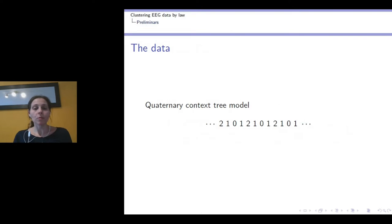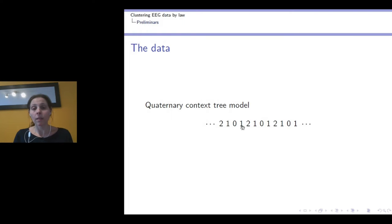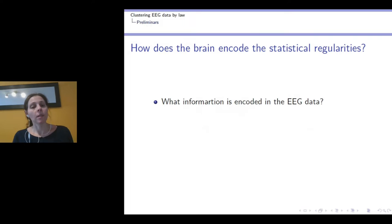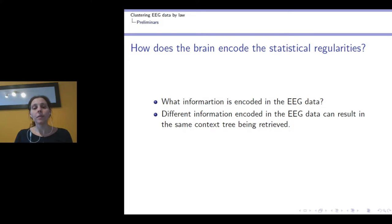We are going to work with the context tree model in the quaternary case, where we have a strong bit followed by a weak bit, then a silent unit, and finally another weak bit. The weak bits were eventually replaced by silent units with probability epsilon, which is a small number. We want to know which information is encoded in the EEG dataset and if different information encoded can result in the same context tree being retrieved.